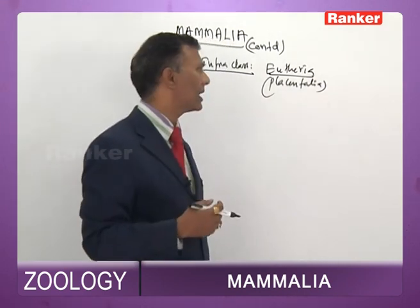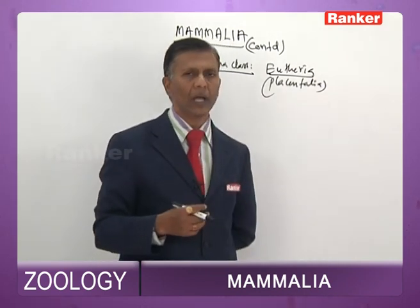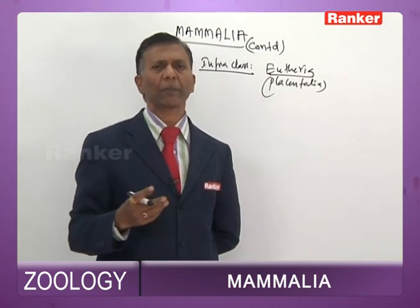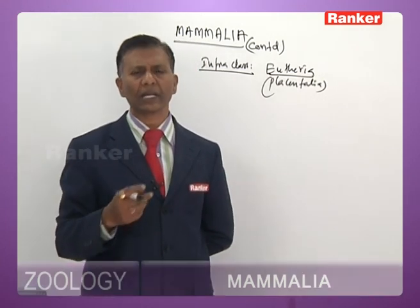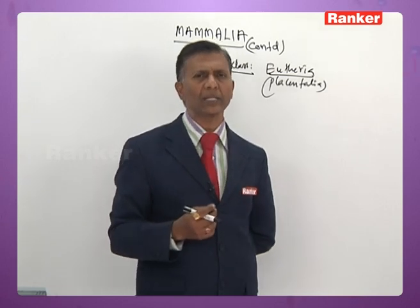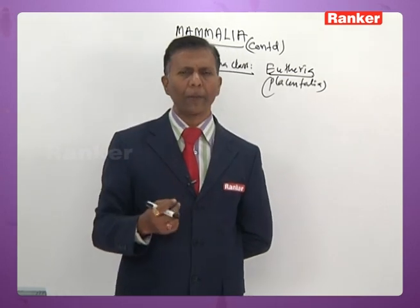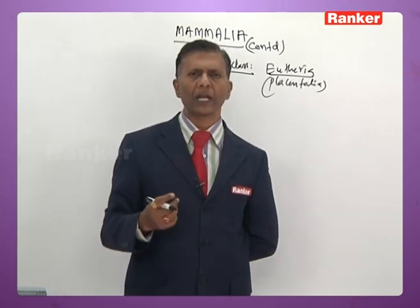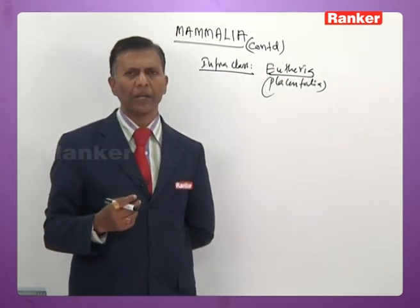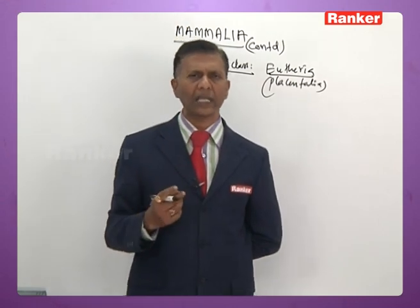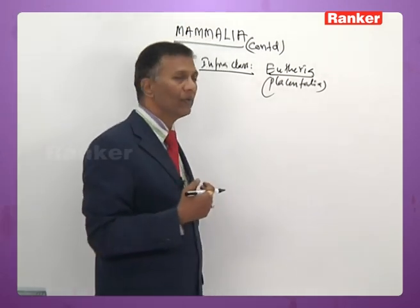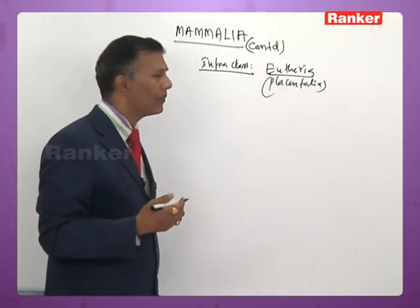Corpus callosum is present, connecting the two halves of the cerebral hemispheres. Four optic lobes (corpora quadrigemina) are present in all. Cloaca is absent. These are all important characteristics of Eutheria.